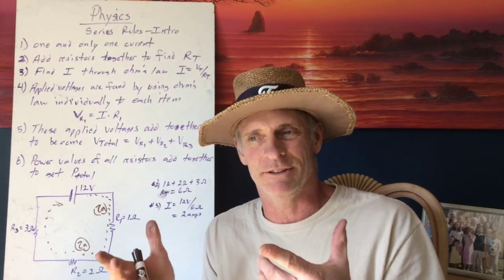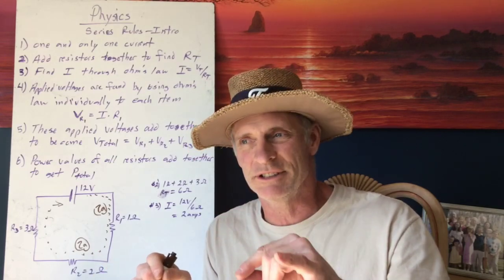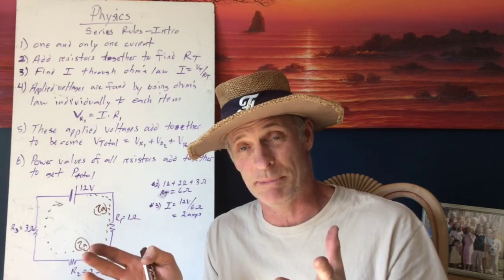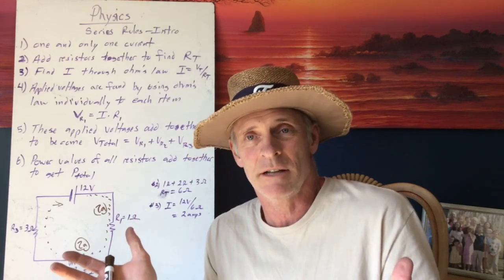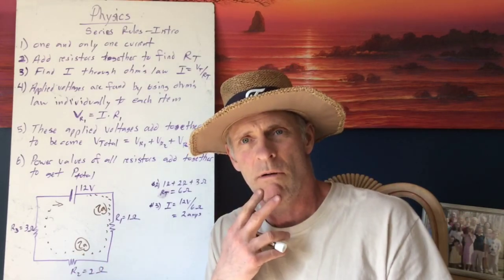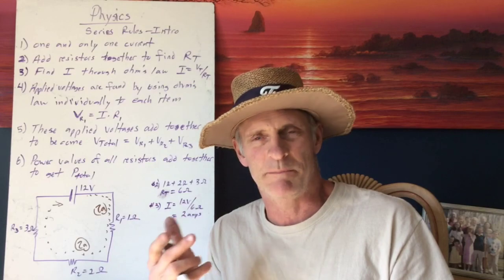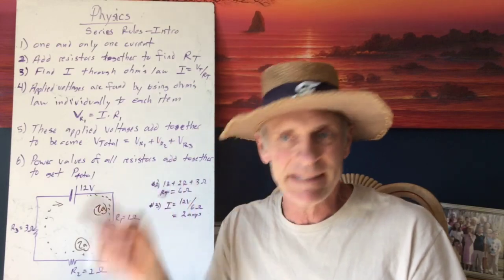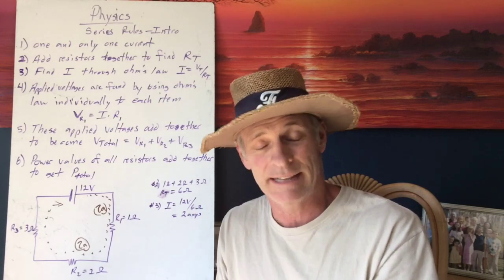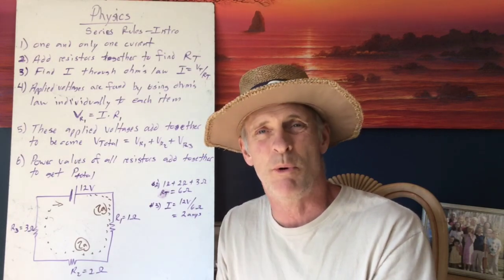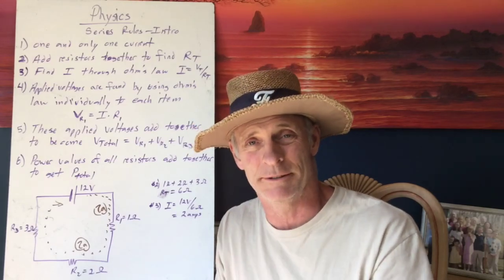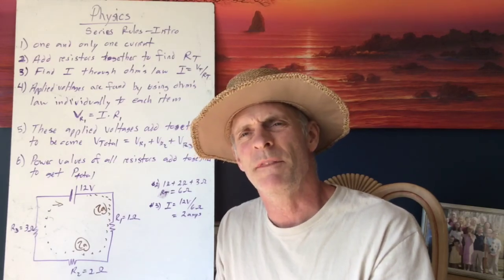These circuit values are made of wires and resistors — charge cannot build up in the middle of a conductor. That would be a capacitor, and we don't have one. Since charge cannot build up, the flow rate must be one flow rate for the entire circuit. There's no point writing I total in a series circuit because there is only one current.